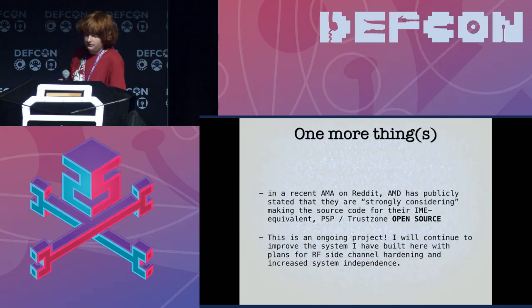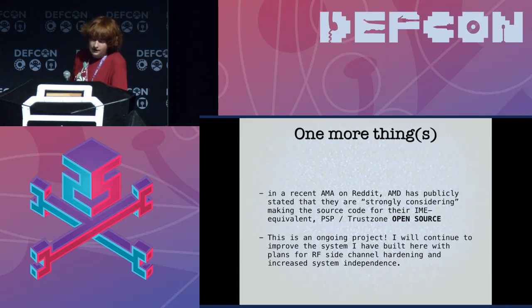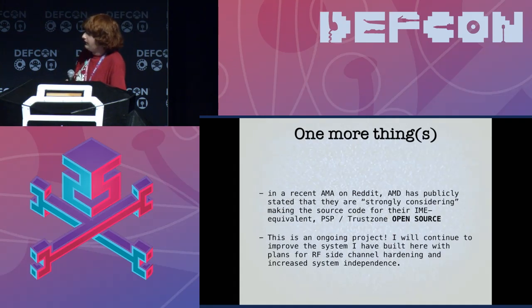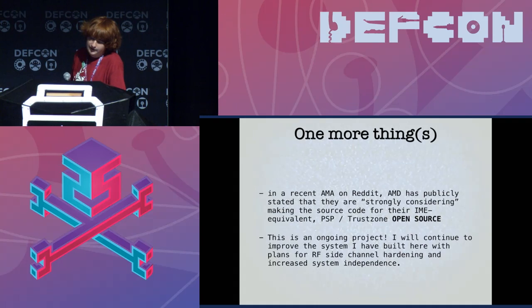AMD on Reddit recently has publicly stated that they are strongly considering open sourcing their IME equivalent, which is Platform Security Processor slash TrustZone. But unfortunately, that was about three months ago and they haven't done anything since. But if they find it economically viable, that would be really, really nice.